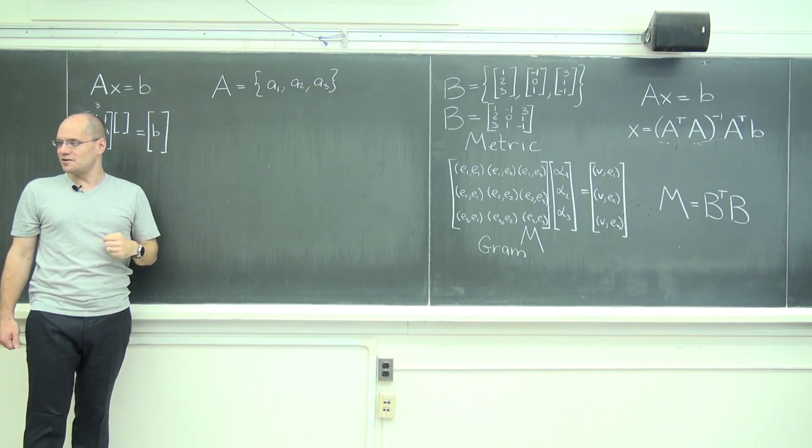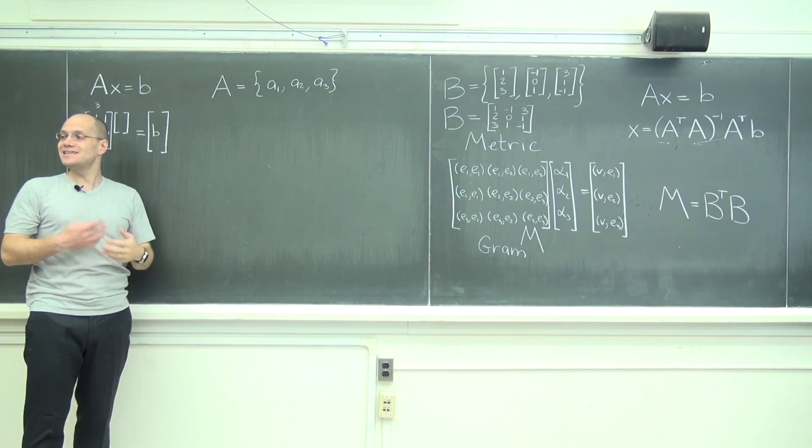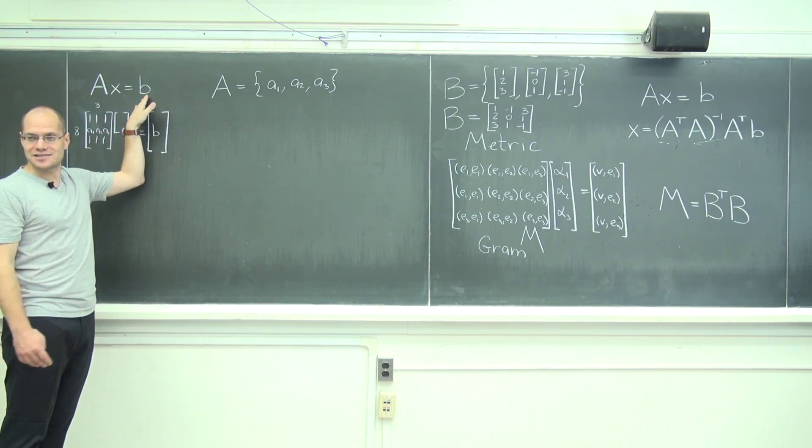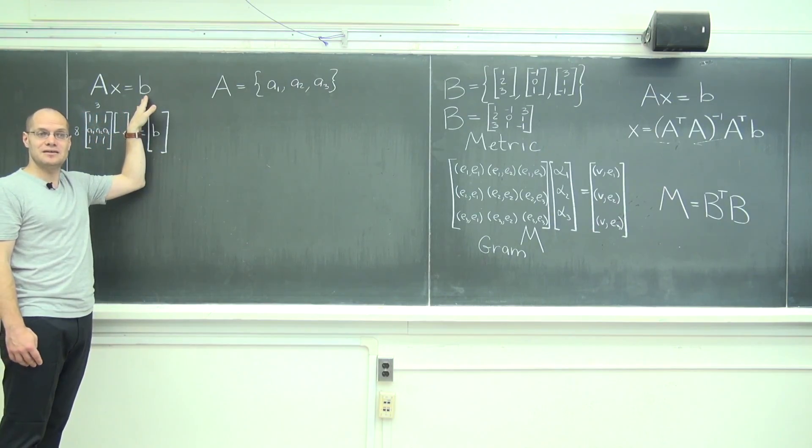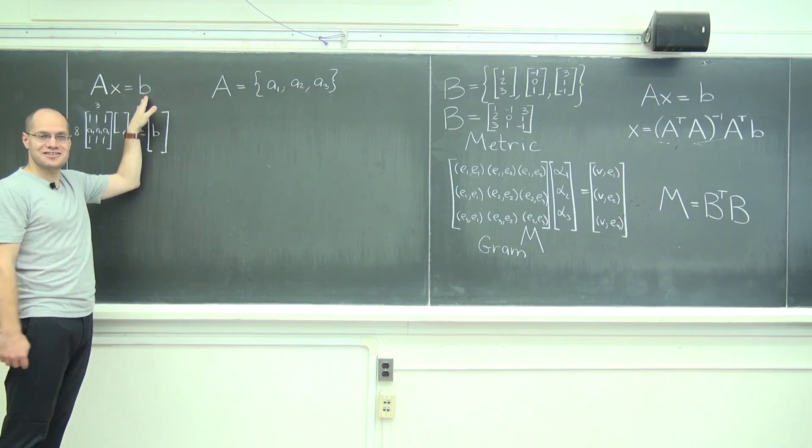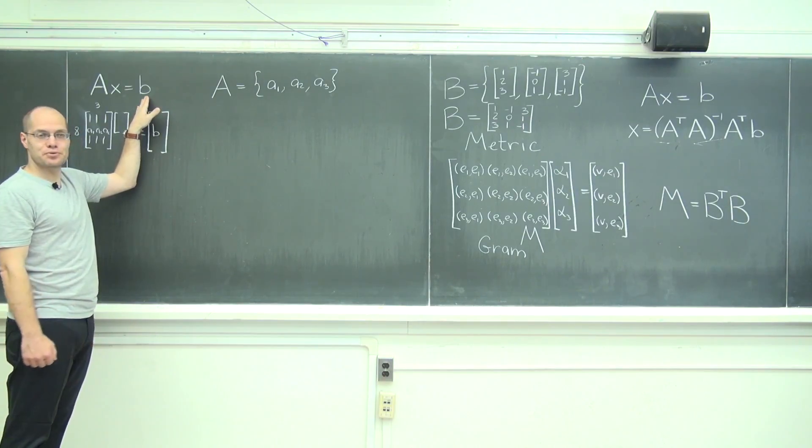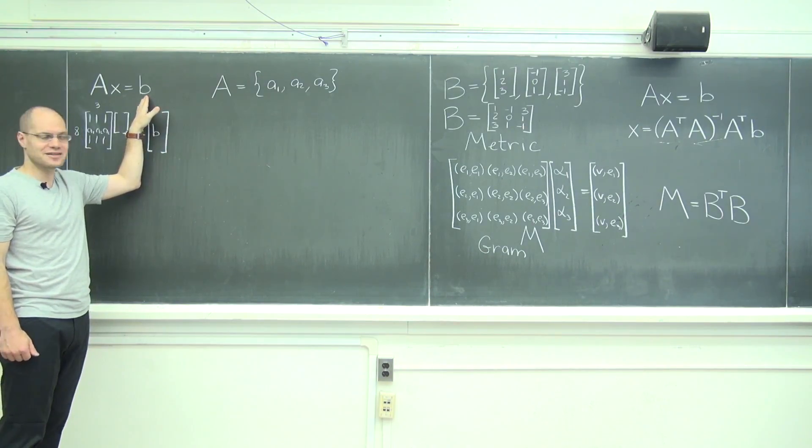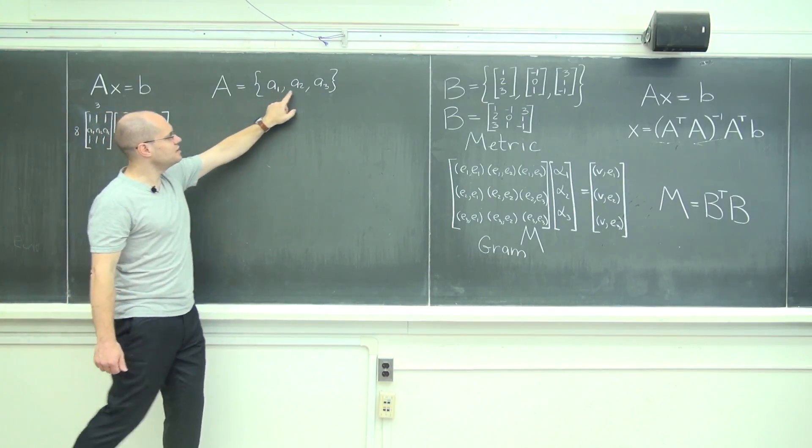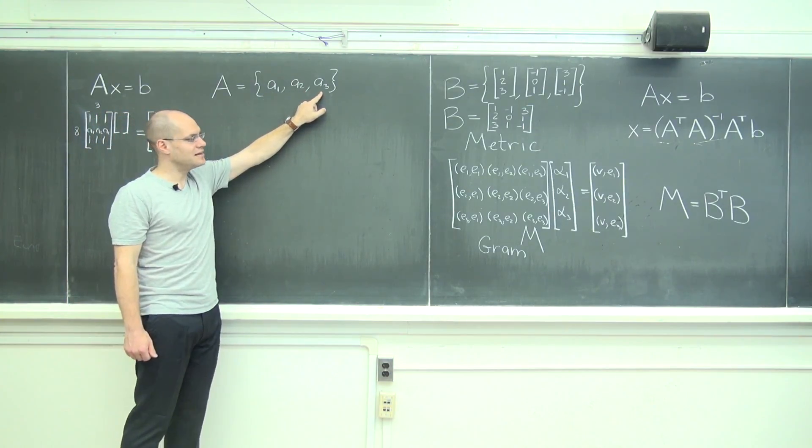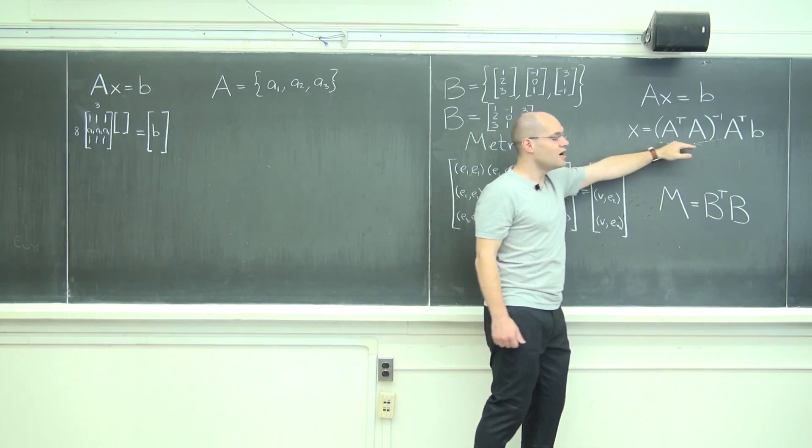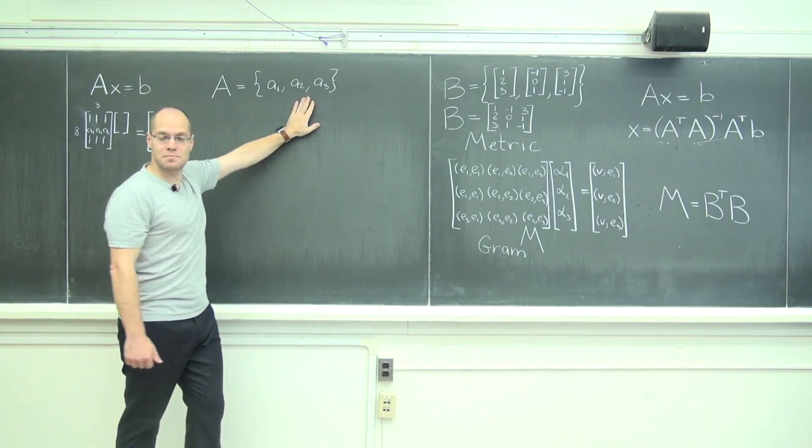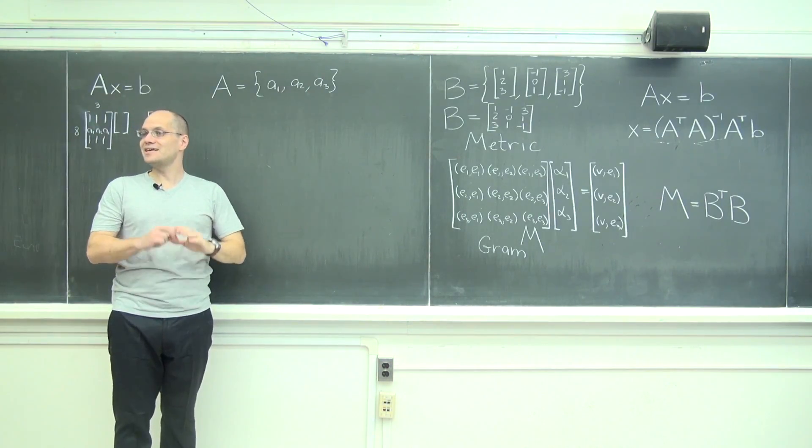The strategy is exactly the same. Project—well, it's too early to say project because we don't have a geometric interpretation yet—but dot with each one of these elements and then multiply by the inverse of the inner product matrix for the subspace spanned by these vectors. The exact same recipe.